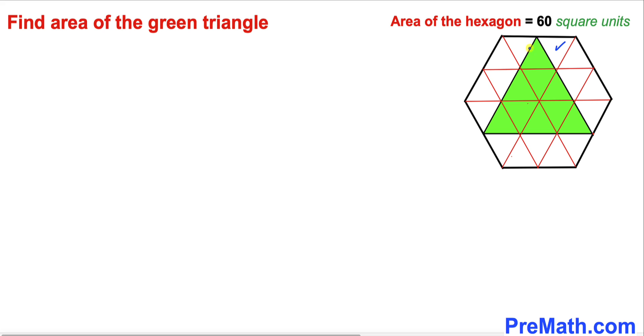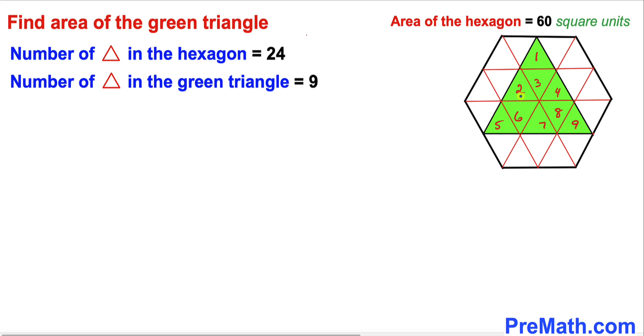As a result, we end up with a bunch of these tiny equilateral triangles. If we count all these tiny triangles, they turn out to be 24 of them, as you can see. Moreover, the number of these tiny triangles inside this green triangle is going to be 9.